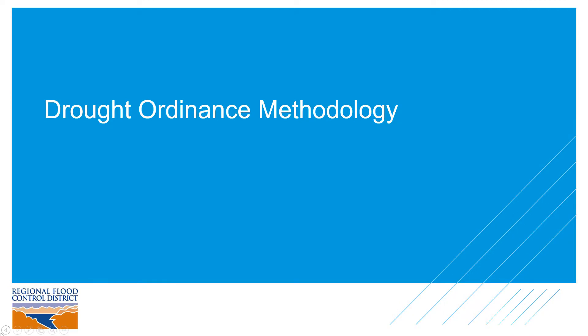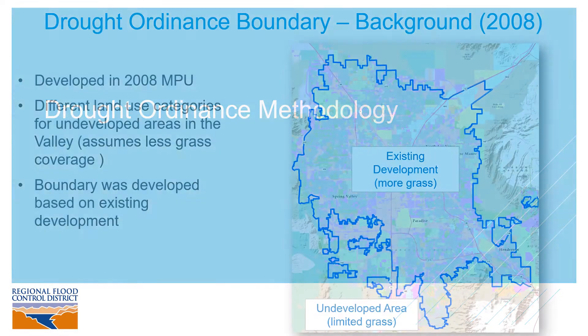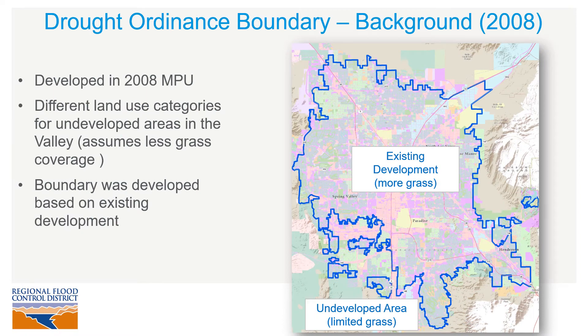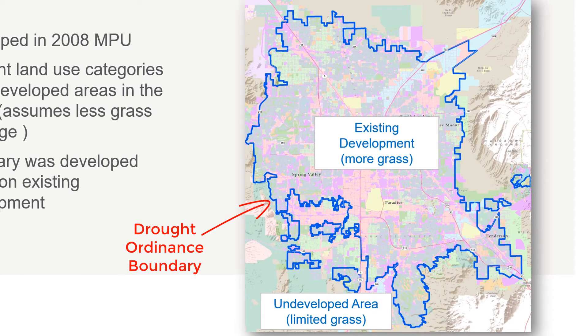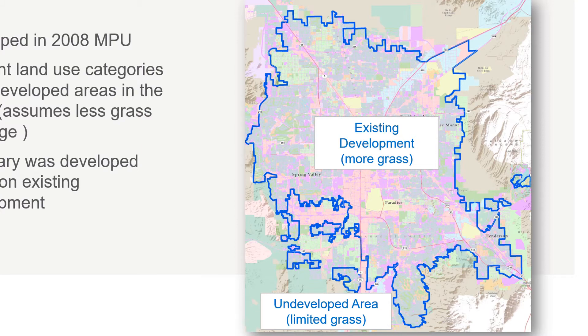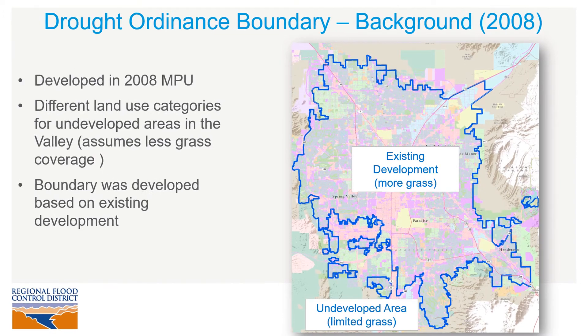Next, let's go over the drought ordinance methodology. To understand this, let me provide a little background about what was done in the 2008 MPU. In that MPU, we came up with a boundary to delineate where existing development had already occurred — we call this the drought ordinance boundary. The reason we did this was because SNWA passed a drought ordinance that limited grass landscaping in any new commercial or residential developments, but these same limitations didn't apply to areas that were already developed before the drought ordinance went into effect.